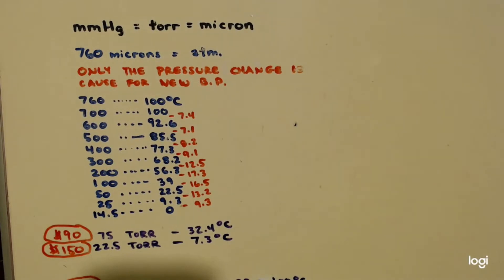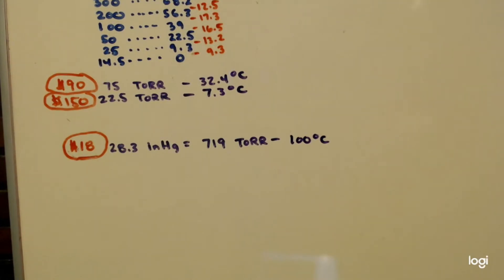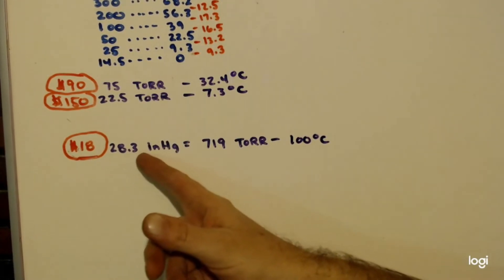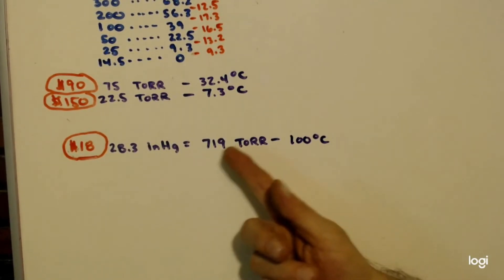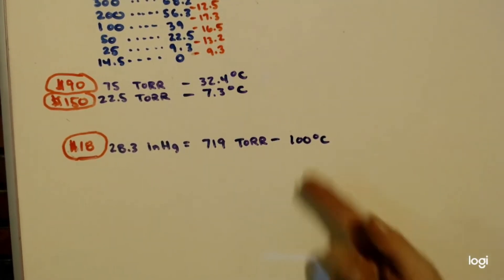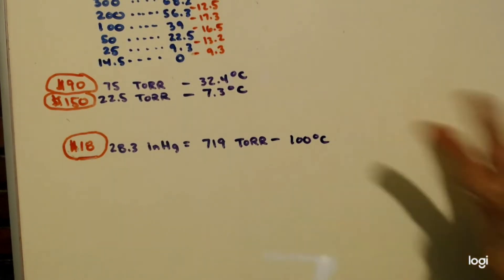Let's go over a couple of vacuums you can buy. Here's the cheapest one — they're all at Harbor Freight, available wherever they have automotive air conditioning supplies. There's one for $18, but it's advertised at 28.3 inches of mercury, which translates to 719 Torr. As you can see, it doesn't even change the boiling point of water — it doesn't change the boiling point of anything. It would be good as a degasser, though.